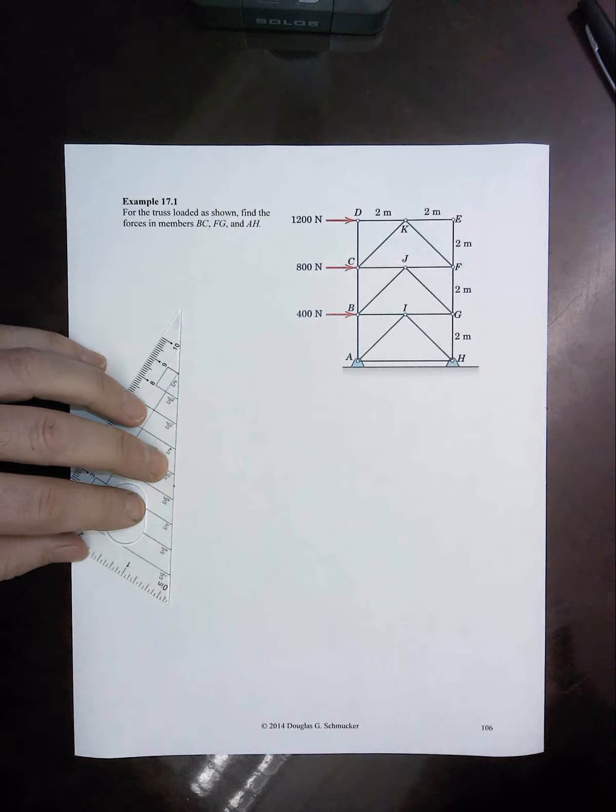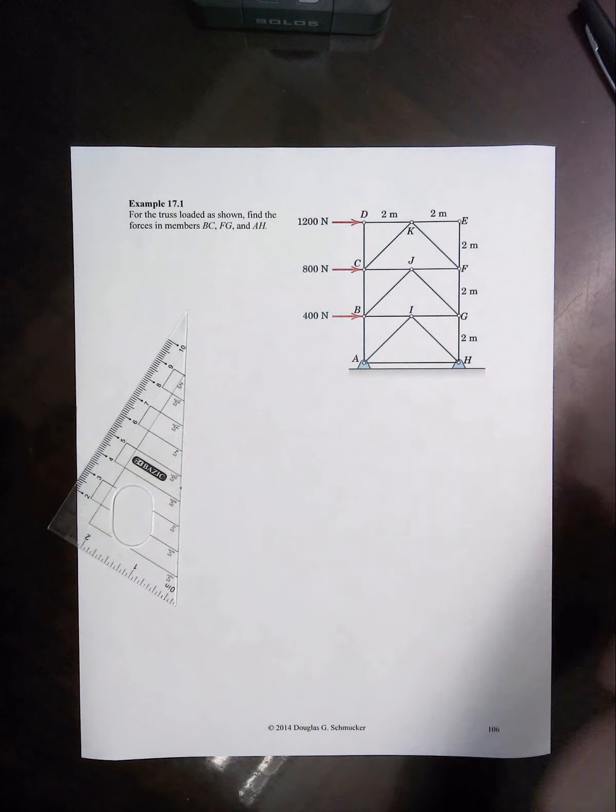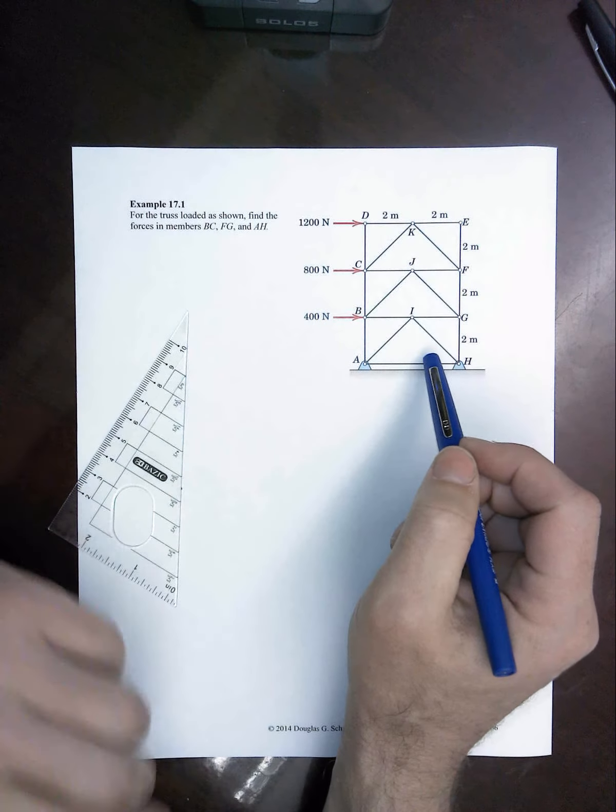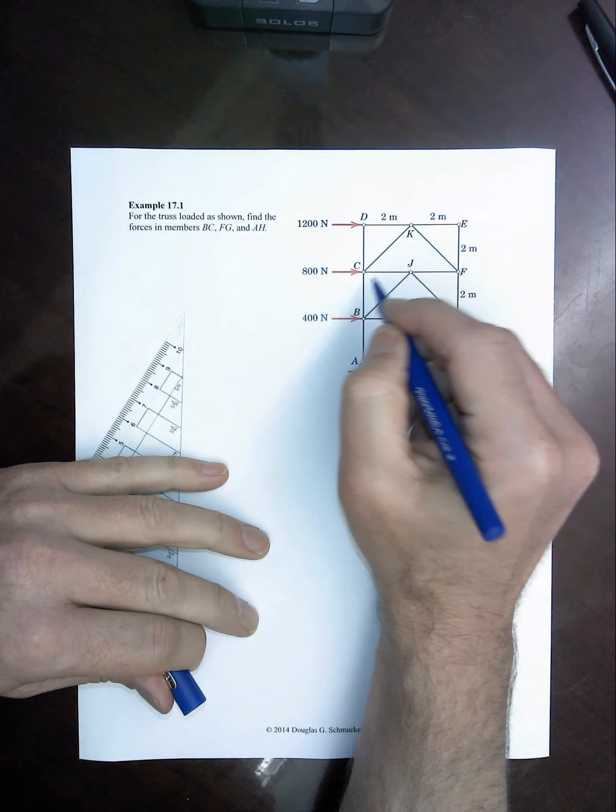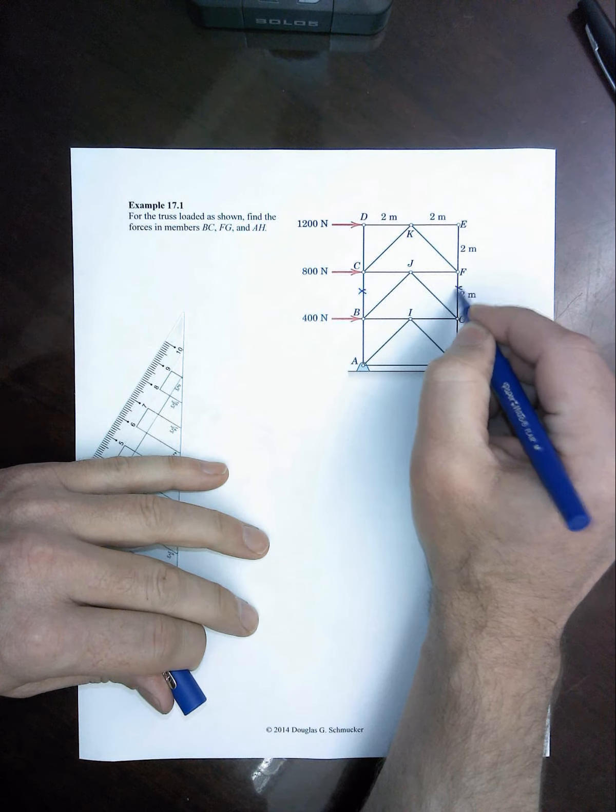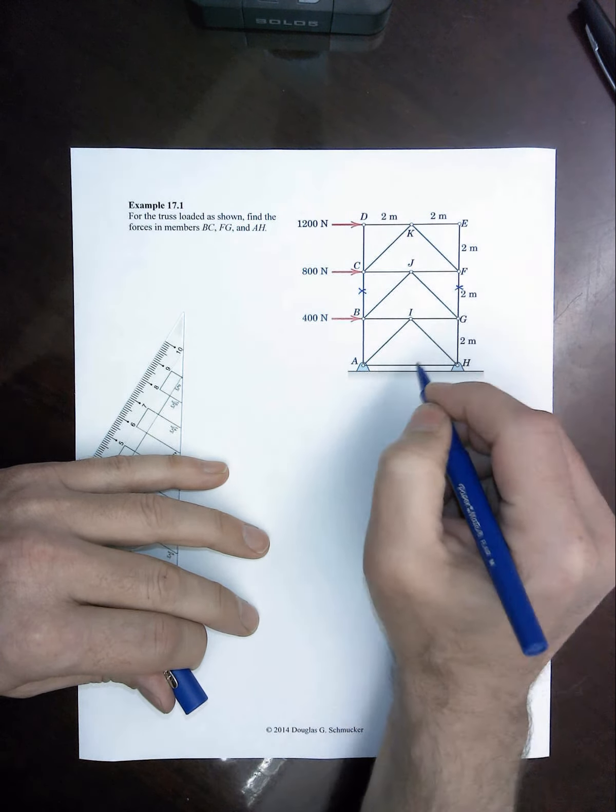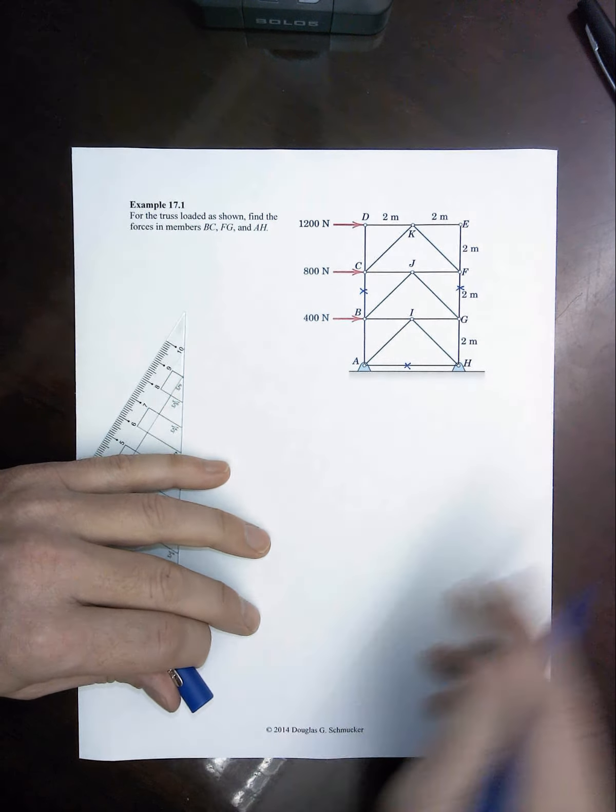In Example 17.1, we're asked to analyze this truss for three specific member forces: BC, FG, and AH.